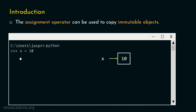Now let's type y equal to x. With y equal to x, we are trying to create a copy of x — we want y to also hold value 10. The assignment operator can be used for that purpose, since this object is immutable; constants can never be changed, so once this object is created, it can never be changed. With y equal to x, y is also pointing to this object — it is another label given to the same object, so we can refer to it using x or y.